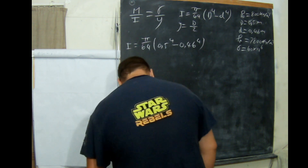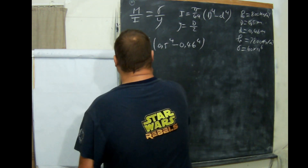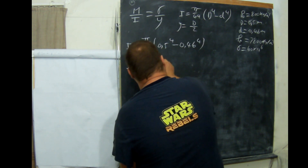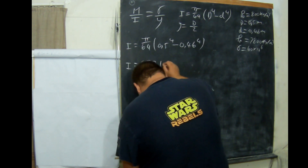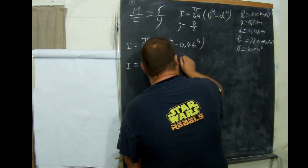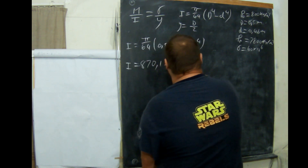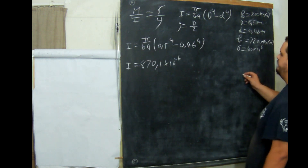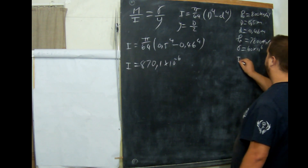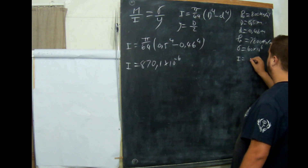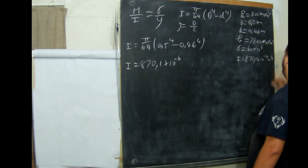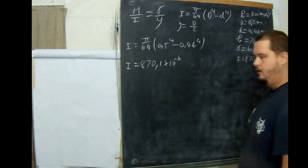We get I is equal to 870,1 times 10 to the minus 6 meters to the 4th power. This will be important later.